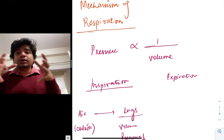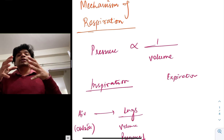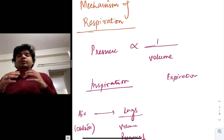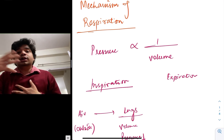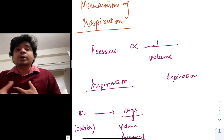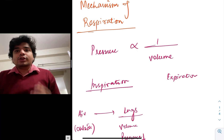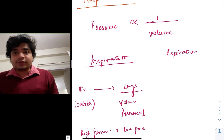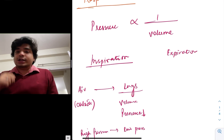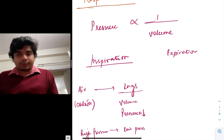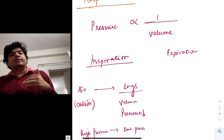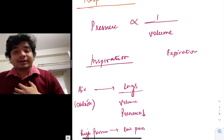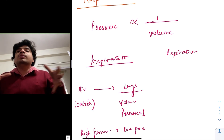So if anything happens to the thoracic cavity, the lungs will have a similar change. We are able to modify our thoracic cavity, which in turn results in modification of the volume or the pressure inside the lung. During inspiration, we have to decrease the pressure inside the lungs to lower than that of the atmosphere, so that air will flow from high pressure to low pressure. In order to decrease the pressure inside the lungs, we have to increase the volume of the lungs.